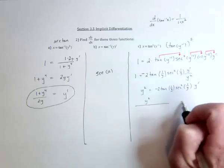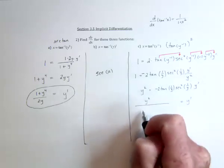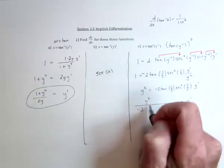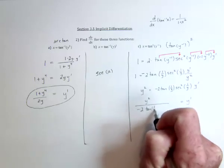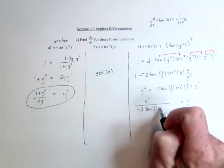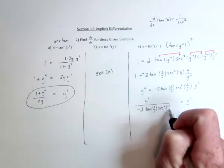So negative 2 tangent of 1 over y, and secant squared of 1 over y.